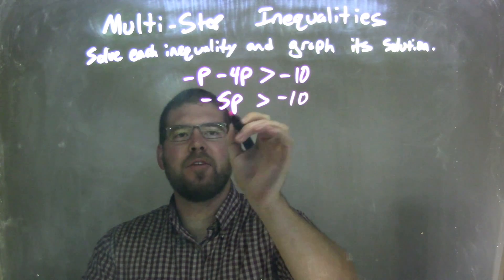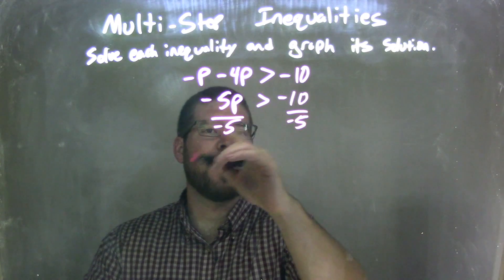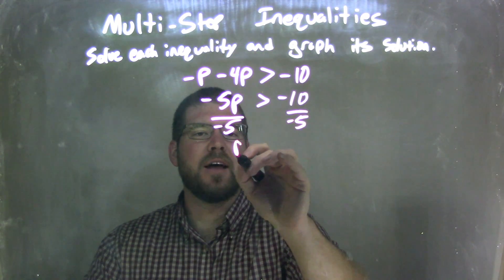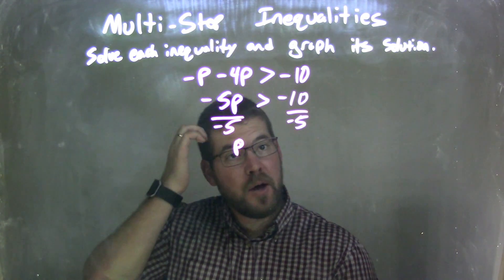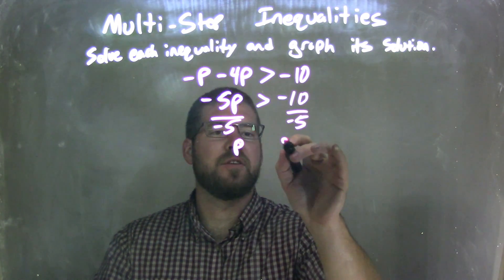Now there's multiplication here. I'm going to divide both sides by negative 5. In doing that, it leaves me with P on the left. On the right, I have negative 10 divided by negative 5, which is positive 2.